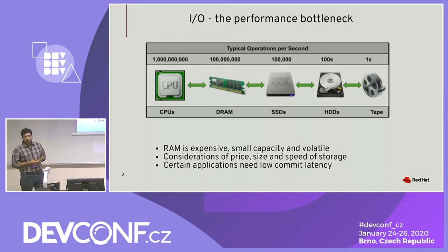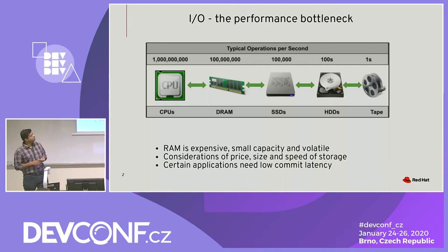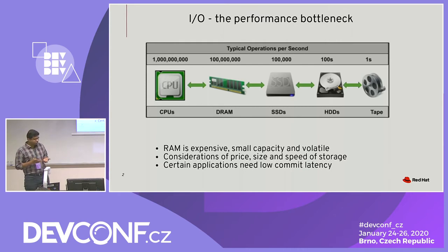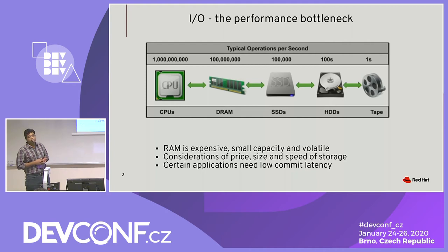Everybody knows what we are talking about when we talk about caching — it exists at every layer of the stack. The I/O subsystem has become the performance bottleneck because CPUs have increased in speed much faster than the backplane of I/O subsystems for most organizations. The latency hit when you exit the RAM subsystem and do I/O to hard disk drives is in the order of several magnitudes. RAM is as fast compared to a traditional hard disk drive as a supersonic fighter jet is compared to a snail.